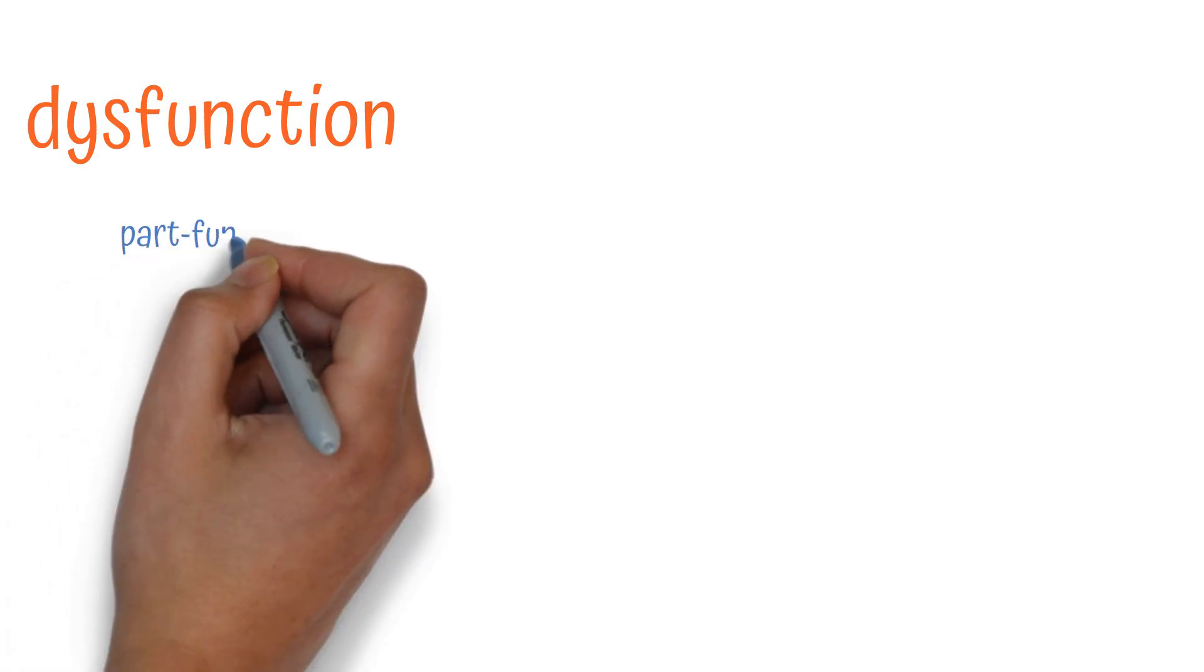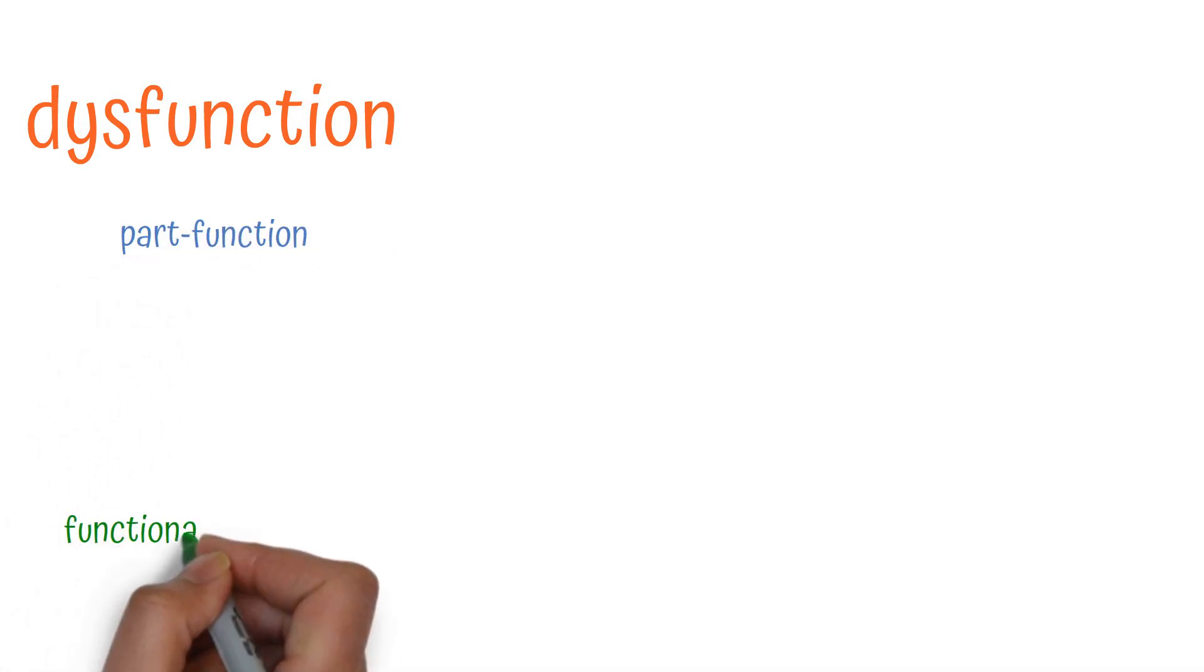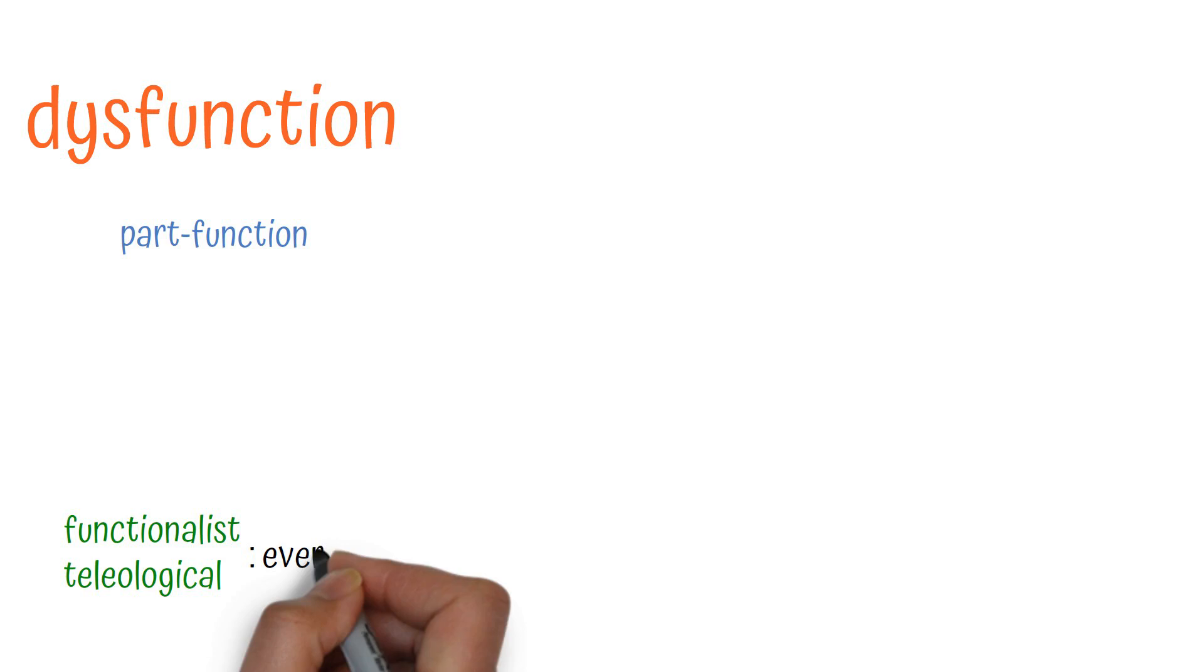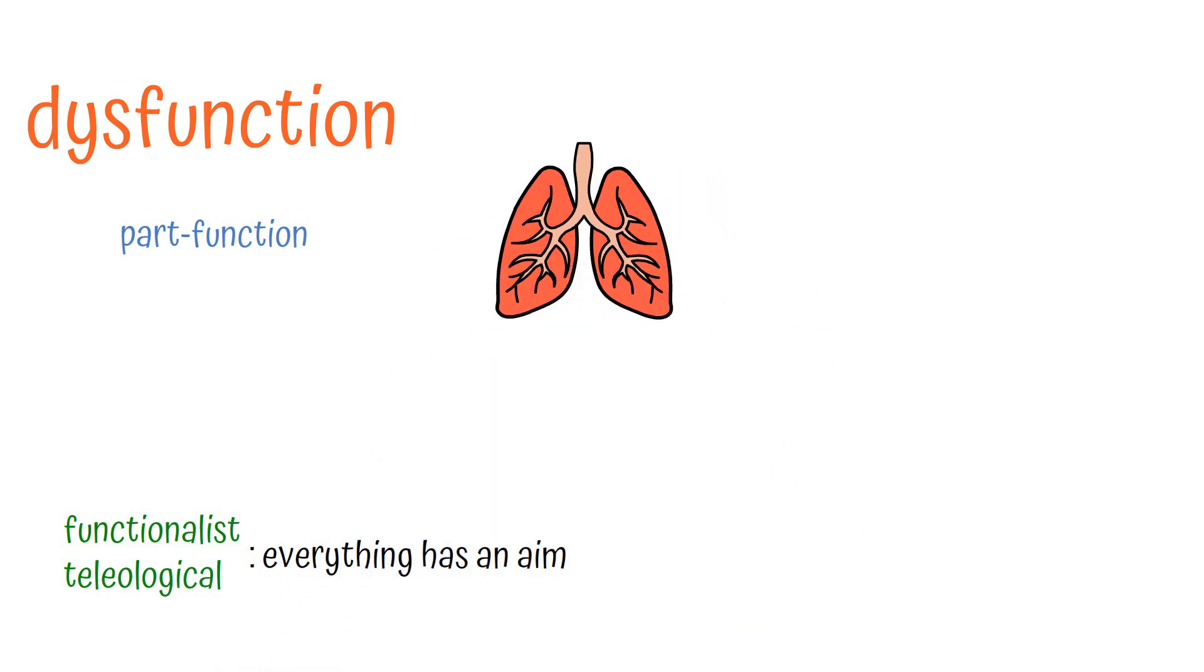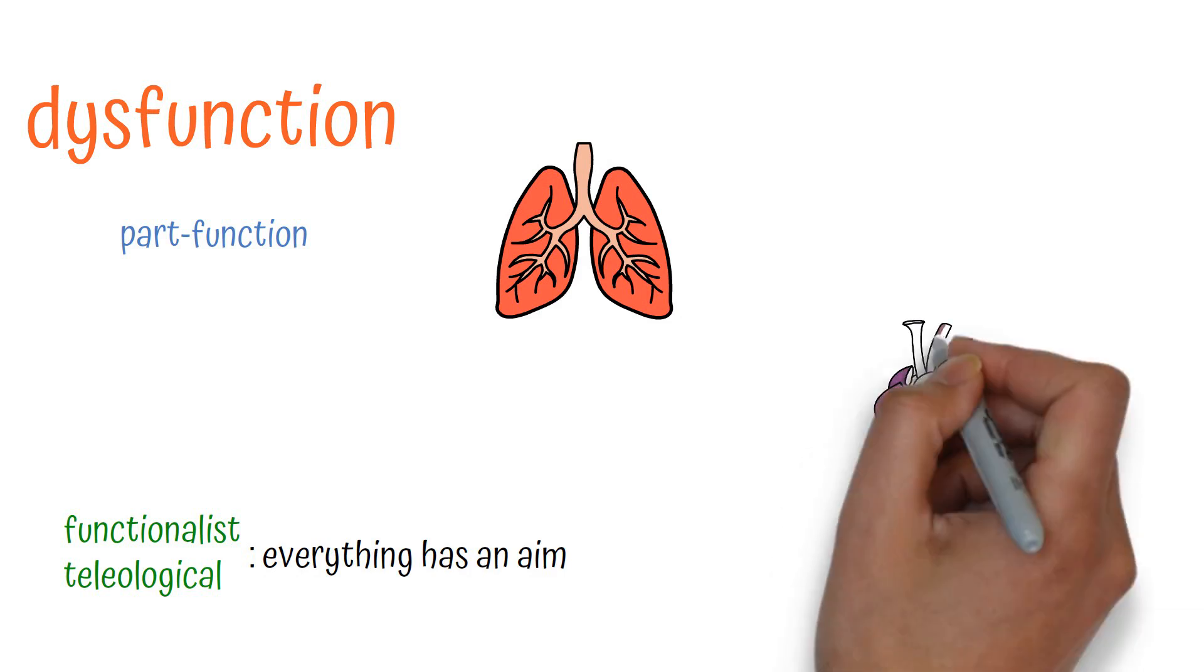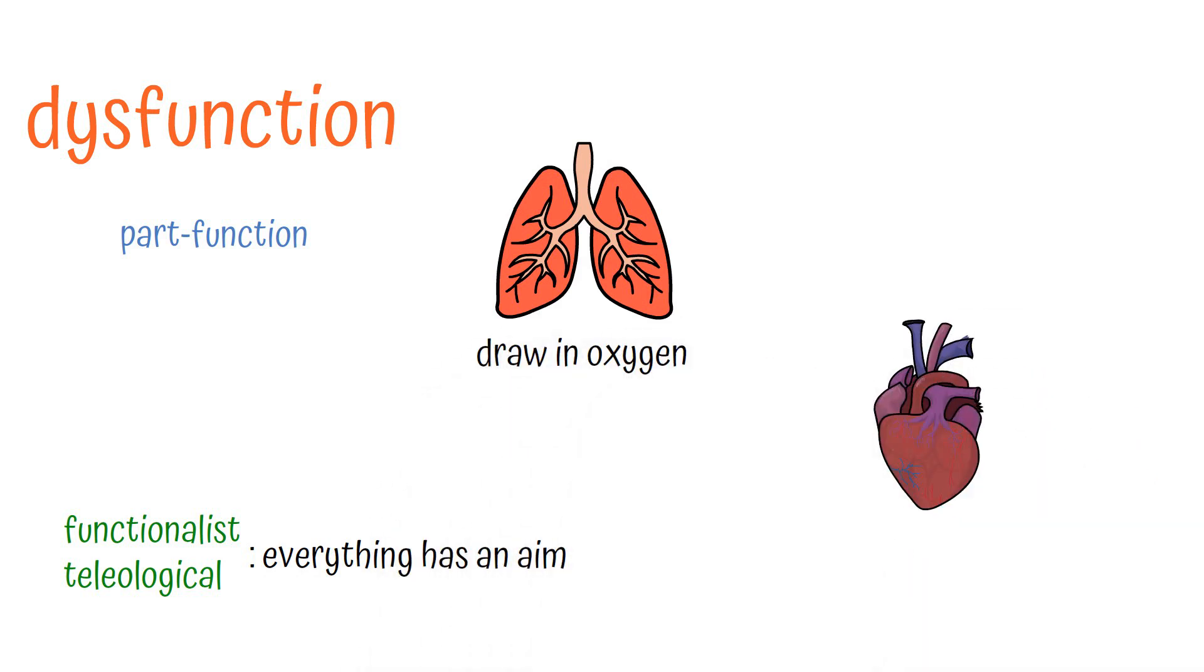Dysfunction harkens back to Boorse's definition of disease as part-function. This functionalist, teleological approach sees organs and systems and limbs and so on as having an aim. The lungs draw in oxygen, the heart circulates blood to oxygenate it, and so on. A biological dysfunction describes an empirical deviation from the body element's purpose.